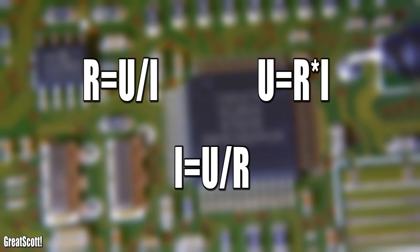Resistance equals voltage divided by current, or voltage equals resistance multiplied by current, or current equals voltage divided by resistance. You get what I mean.